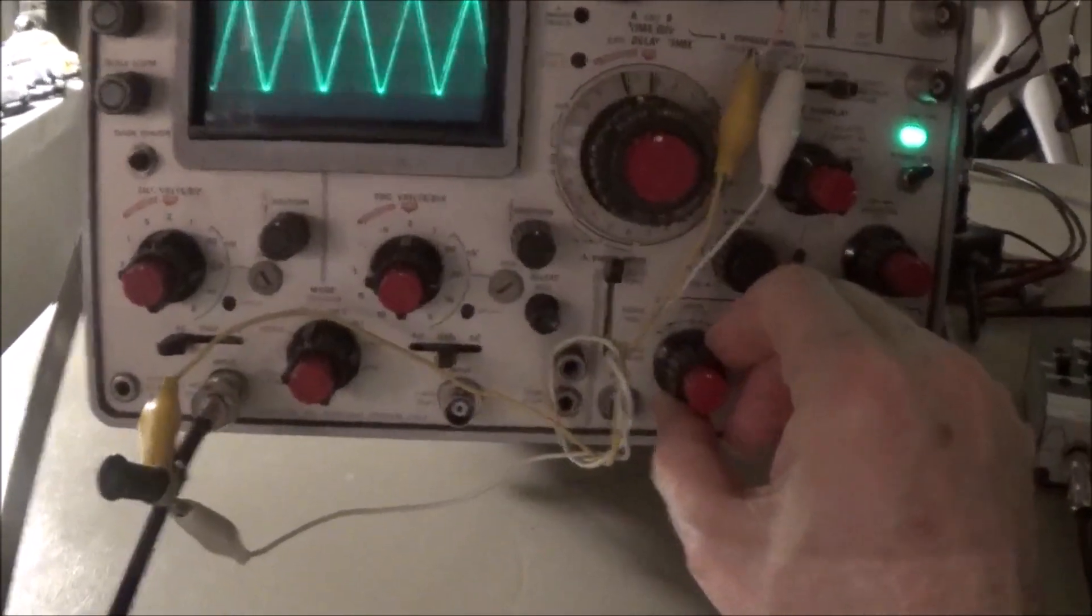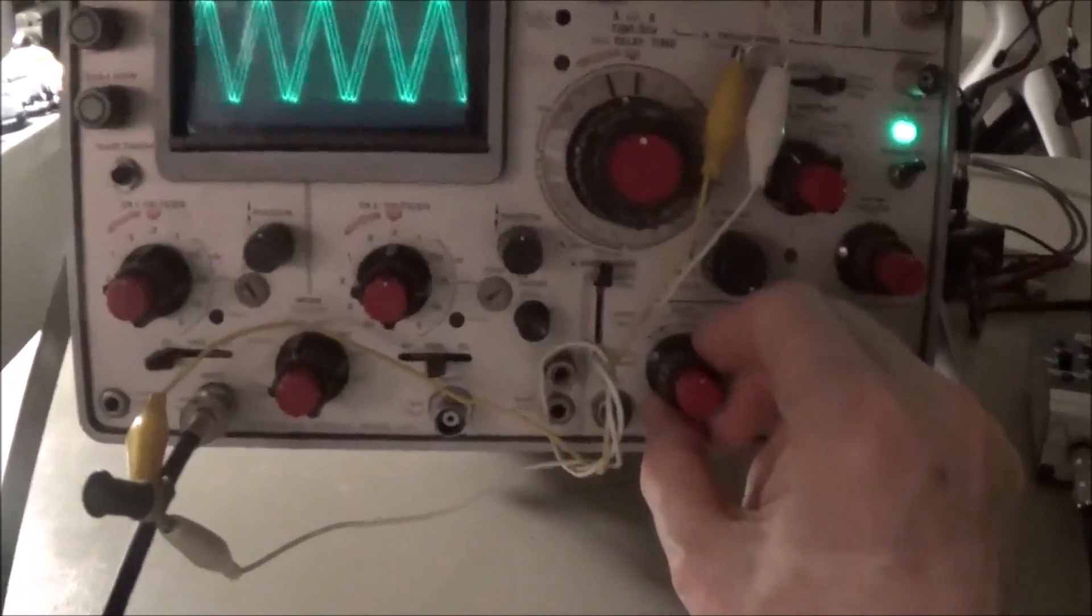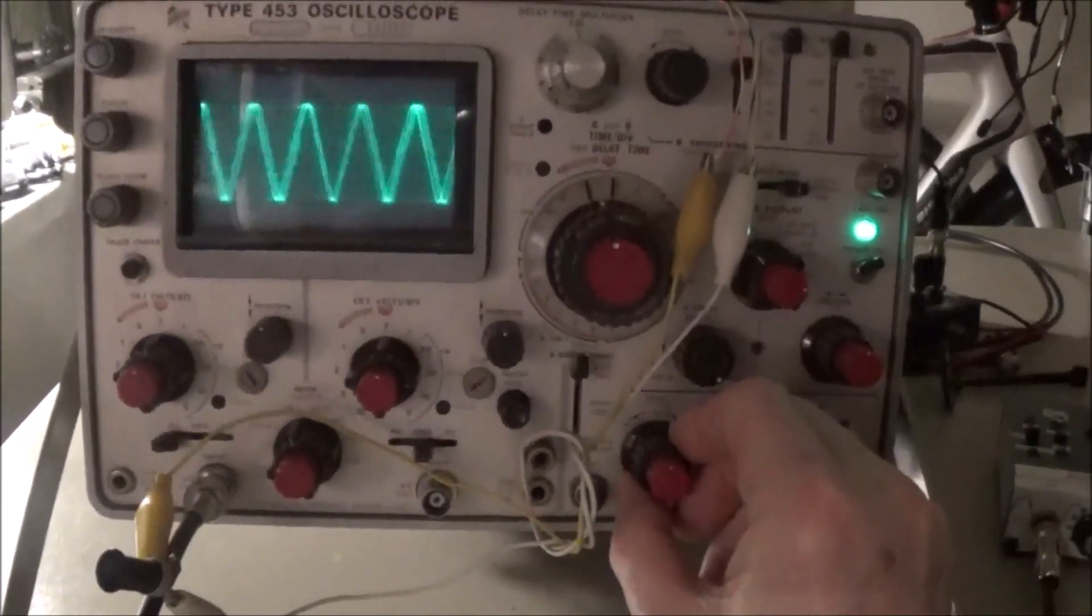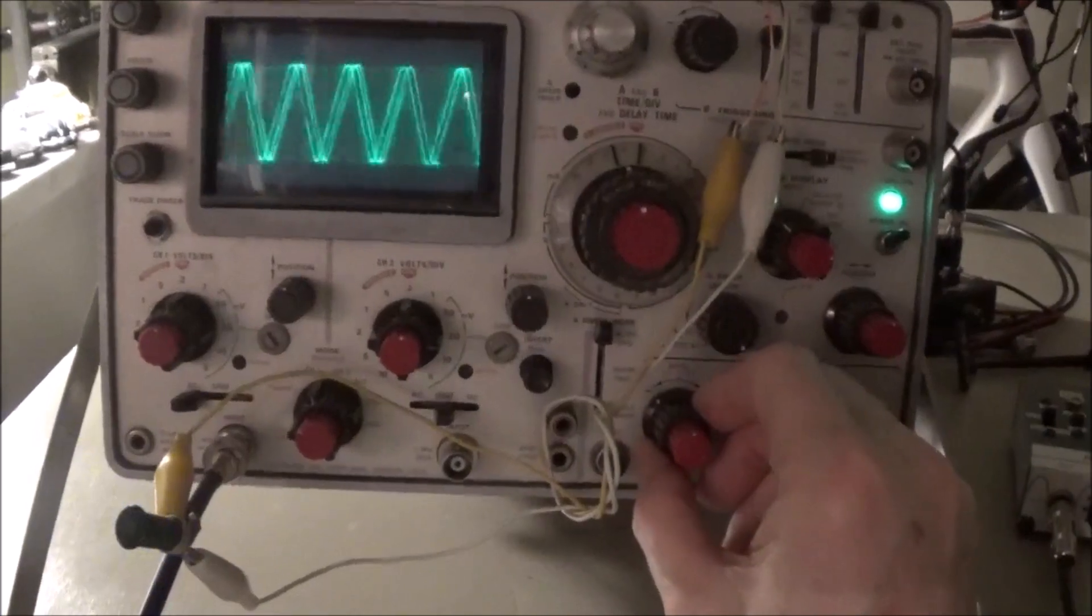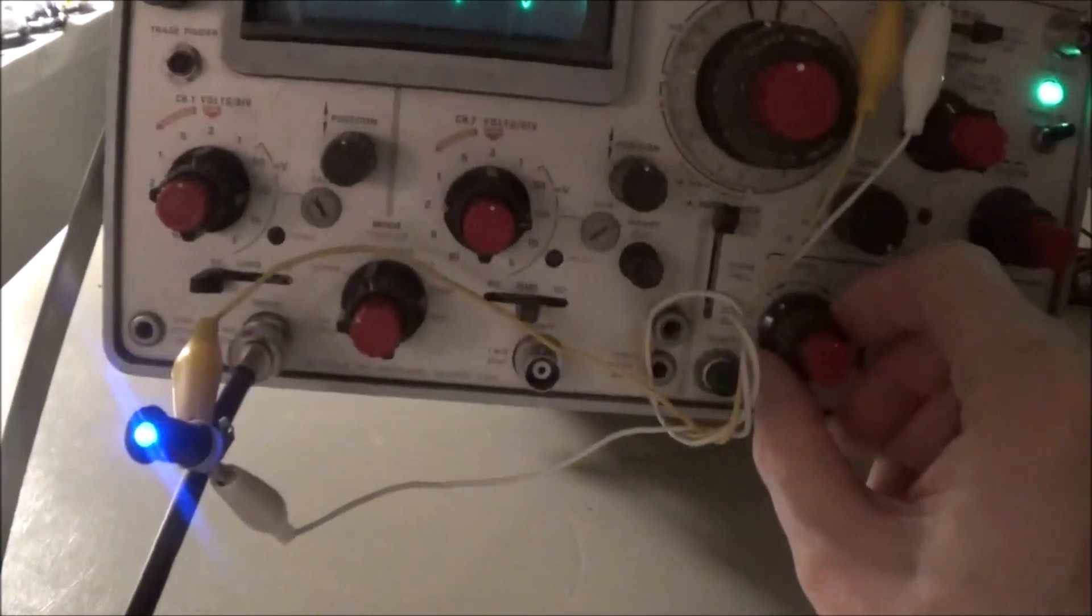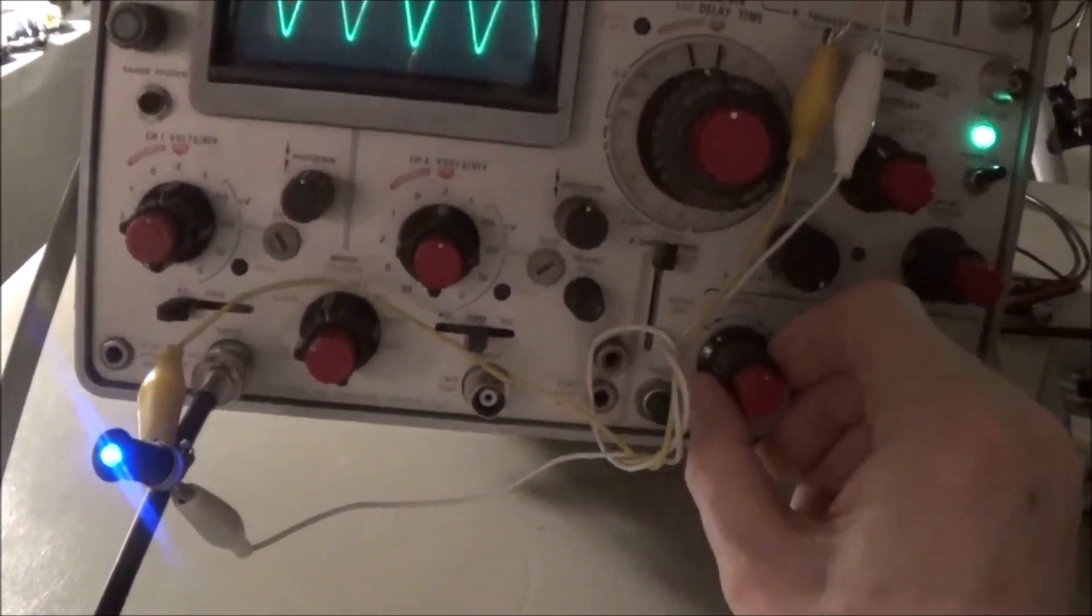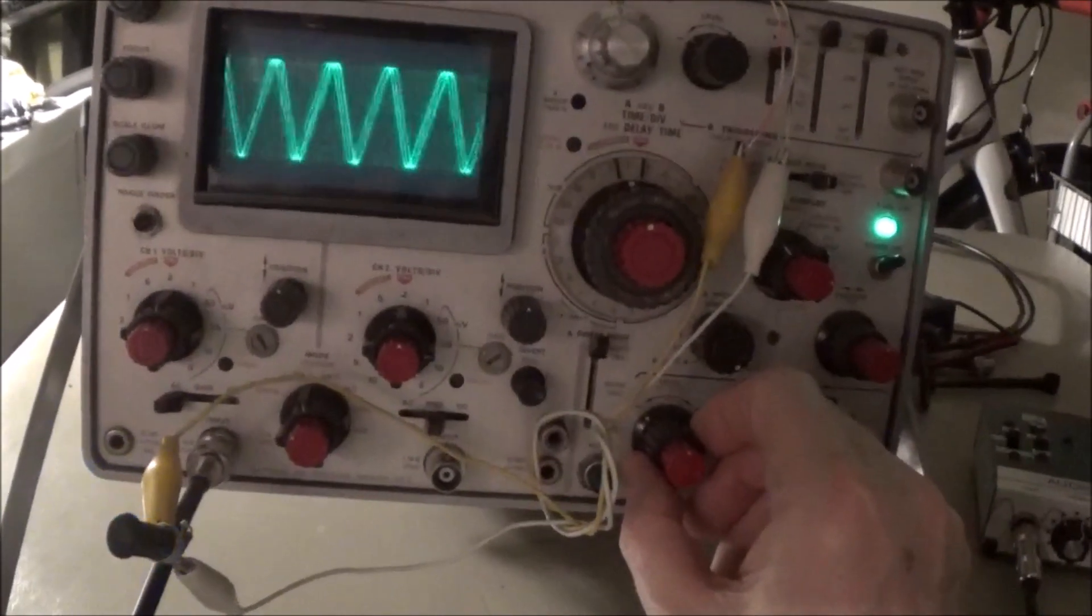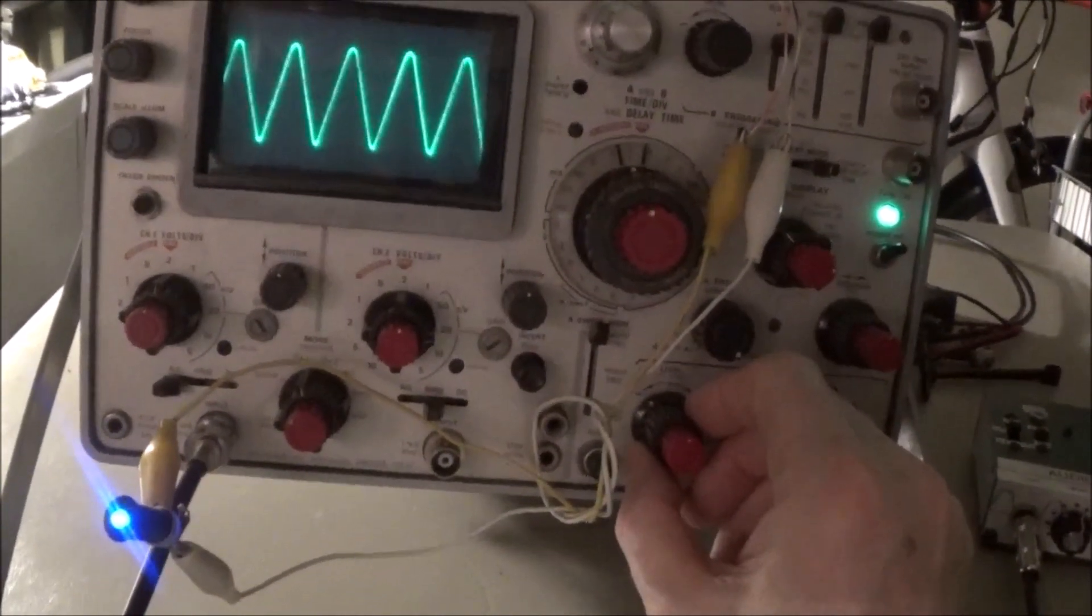Now when I turn this level control to lock on the signal, our little indicator light comes on. When it's not triggered it goes off. So it's working.